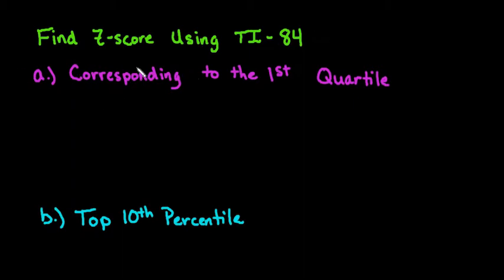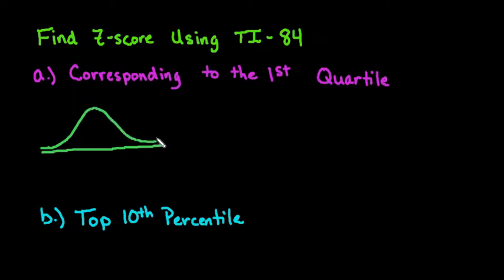For the first one, we're looking for the first quartile — the z-score that corresponds to the first quartile. Remember that a z-score uses the standard normal model, which tells us that our mean is 0 and our standard deviation is 1. So anytime you're looking for a z-score, mean is 0 and standard deviation is 1.